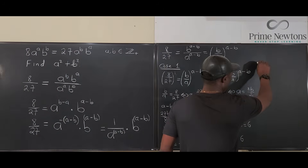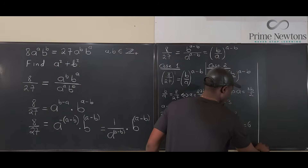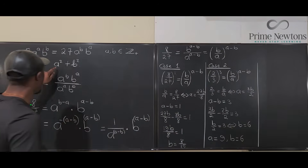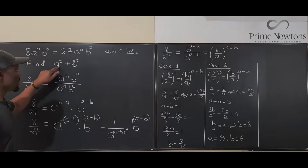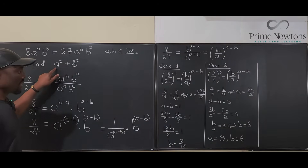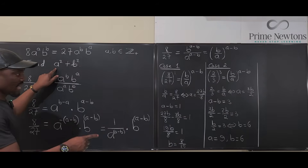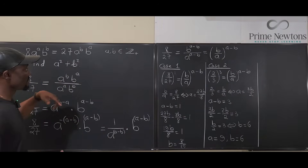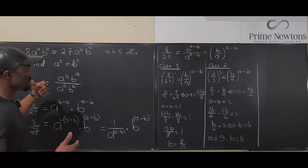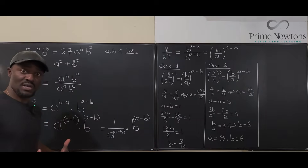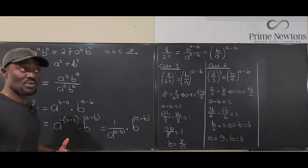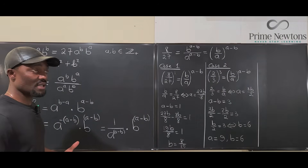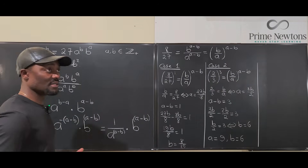We found a valid solution: a equals 9, b equals 6. So a squared plus b squared equals 9 squared plus 6 squared, which is 81 plus 36, ending in 117.